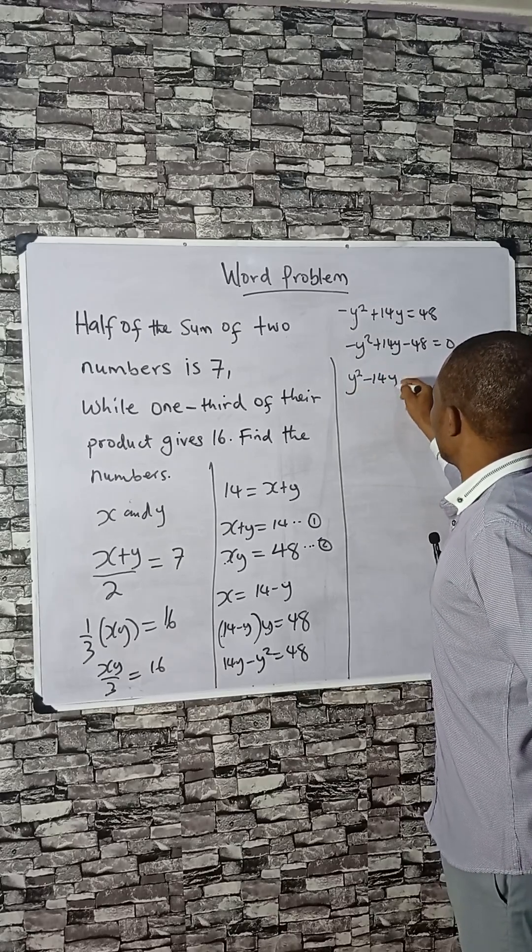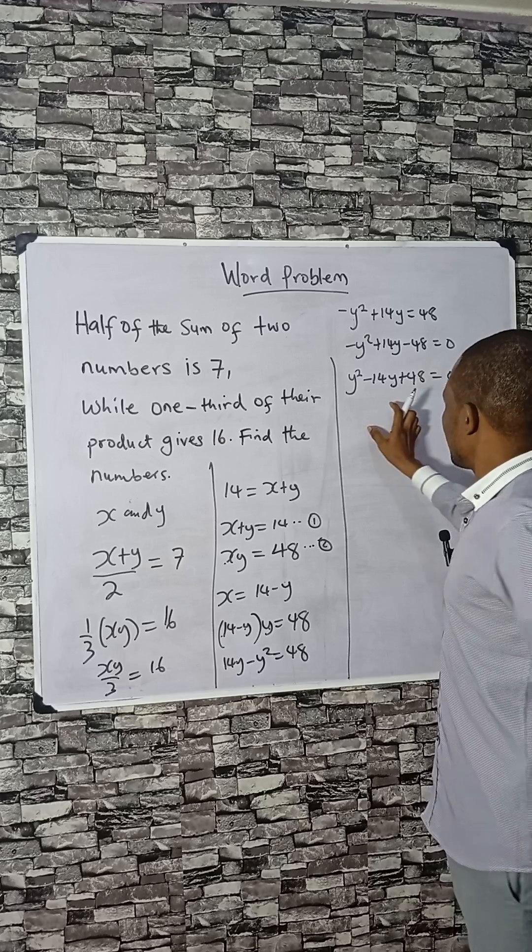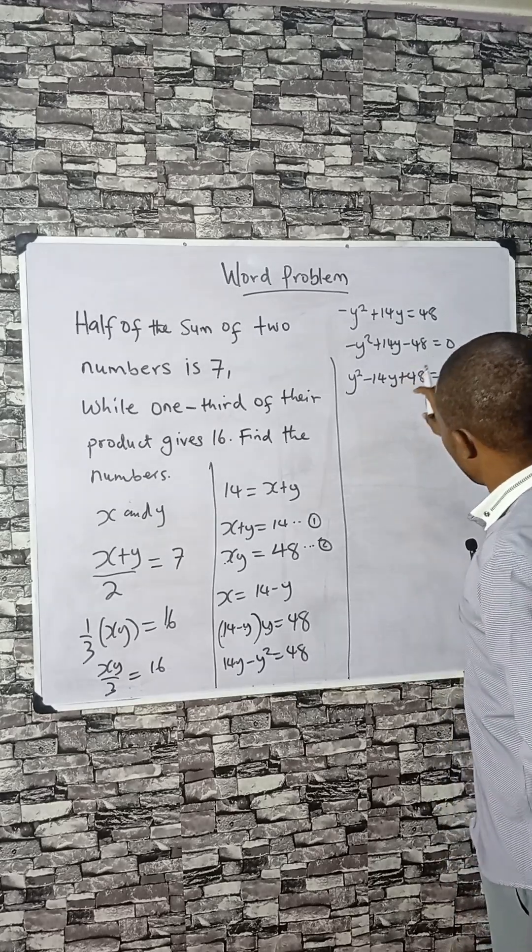Y squared minus 14y plus 48. Now let's factorize this. The two numbers I've been using will be 8 and 6.